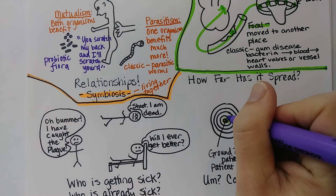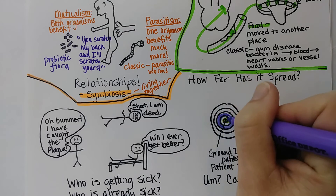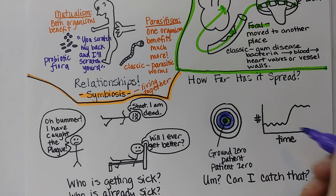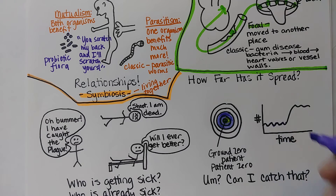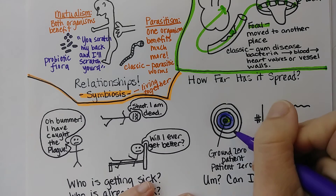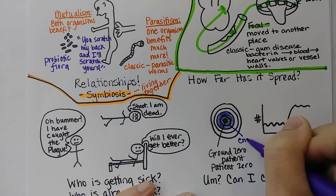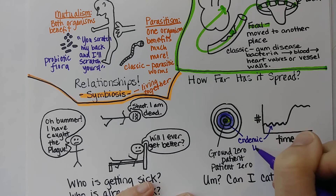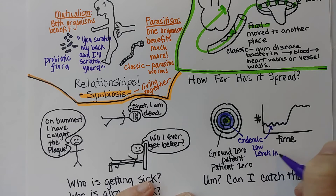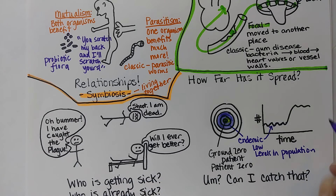If an infection is locally found at normal levels in a population, we say it's endemic — for example, the flu always has a little bit going on in a population. Endemic means low levels in the population. Compare that with epidemic.